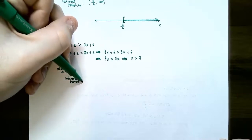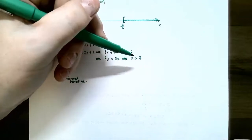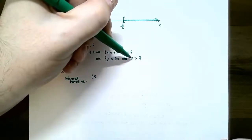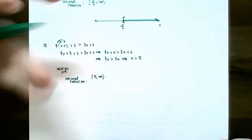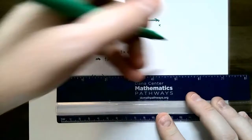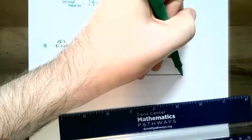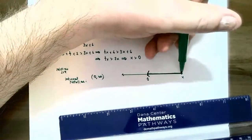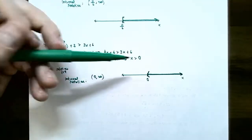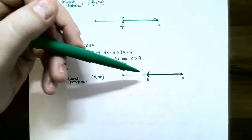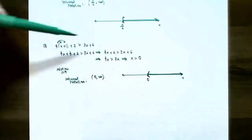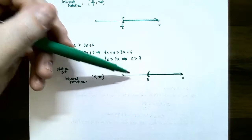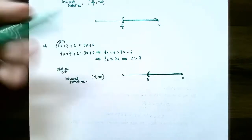The interval notation is (0, ∞) — since it's strictly greater than (not or equal to), you do not include x = 0, so use a parenthesis instead of a bracket. Always use parentheses with infinity or negative infinity. On the number line, place 0 in the center, use a parenthesis opening to the right, and shade to the right forever. As a check: pick x = 5 (greater than 0) and plug it into the original inequality — if it's true, you shade that side. Try x = −2 and if it's false, don't shade that side.